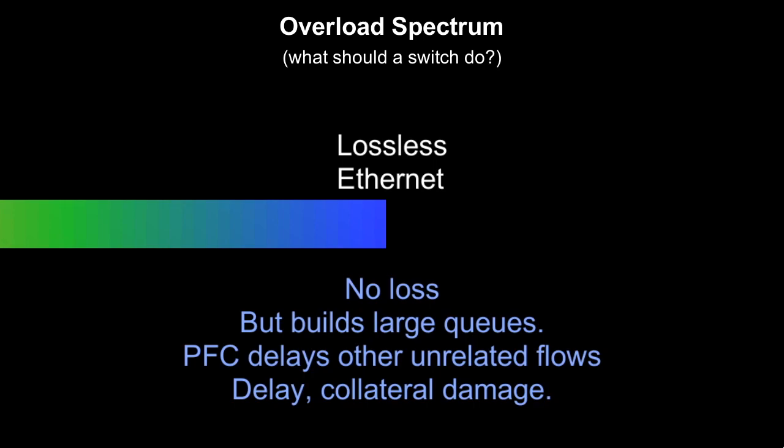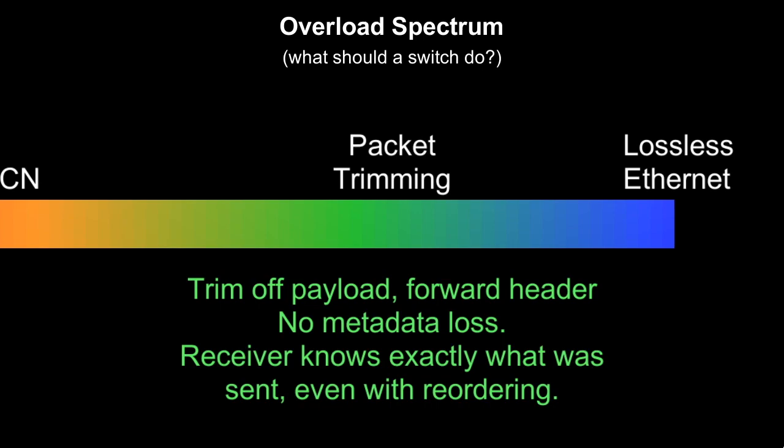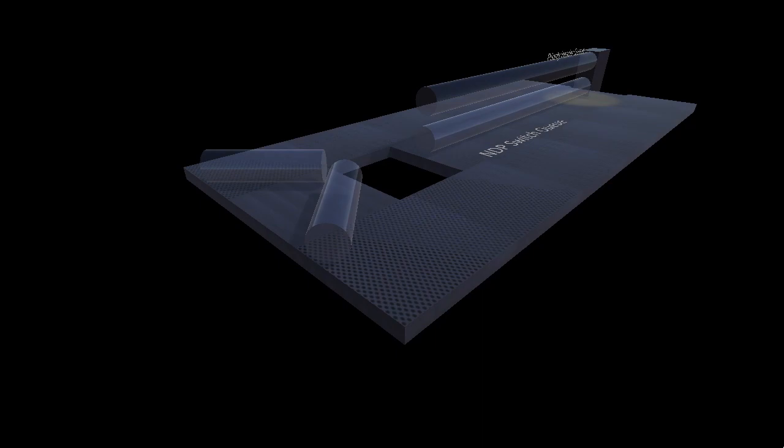At the other end of the spectrum we have lossless Ethernet. Unfortunately it builds large queues too, and PFC can delay other unrelated flows. We wanted some middle ground, and the cut payload paper from Tsinghua University gave us an idea. When a queue fills, trim off the payload and forward just the header. This gives the network lossless for metadata, though not for data.